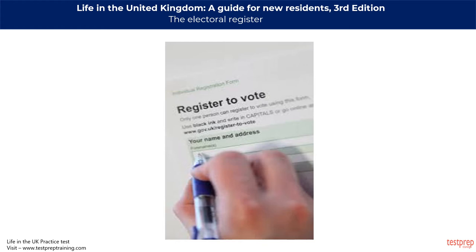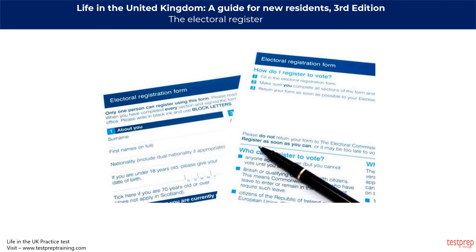To vote in a parliamentary, local, or European election, your name must be on the electoral register. You can register by contacting your local council electoral registration office, or find your local authority at www.aboutmevote.co.uk. The electoral register is updated every year in September or October, when a registration form is sent to every household. In Northern Ireland, individual registration operates, where all those entitled to vote must complete their own registration form. Once registered, people stay on the register provided their personal details do not change. By law, each local authority must make its electoral register available for anyone to look at, kept at the local electoral registration office or council office.